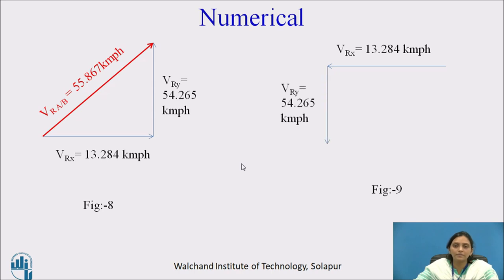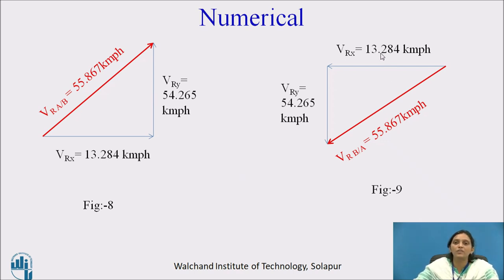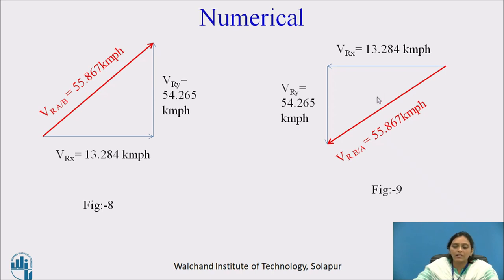Similarly, the vector diagram of relative velocity of B with respect to A can also be drawn. All the calculations will be the same; the only change is that VRx will be plus 13.284 — plus means in the direction of velocity, so this is the direction in x. With respect to A, B is moving in the opposite direction in the vertical. We join the first point and second point, and from first point to second point indicates the direction of the relative velocity — this is the vector diagram for the relative velocity of car B with respect to A.